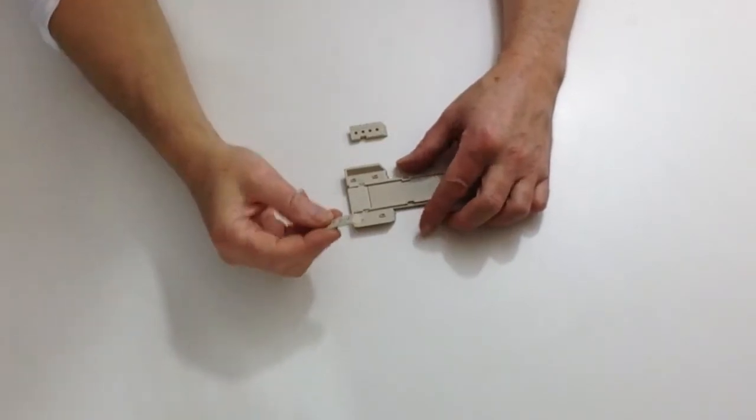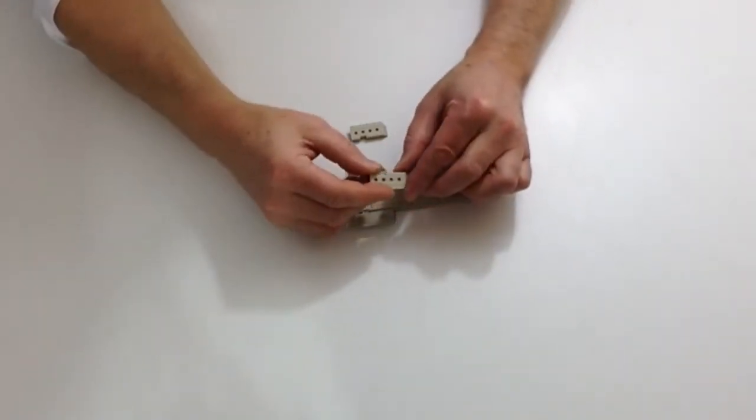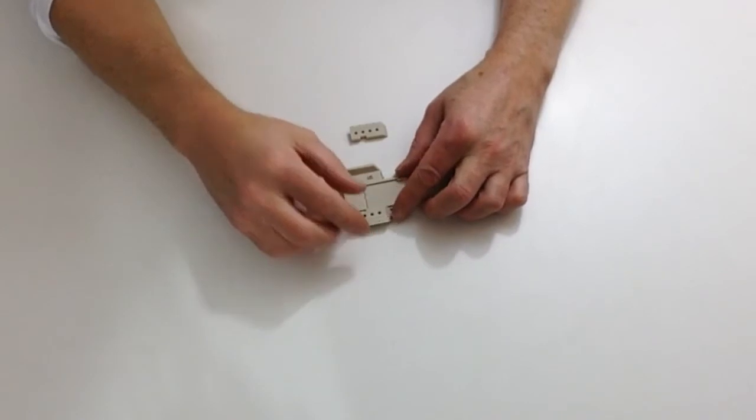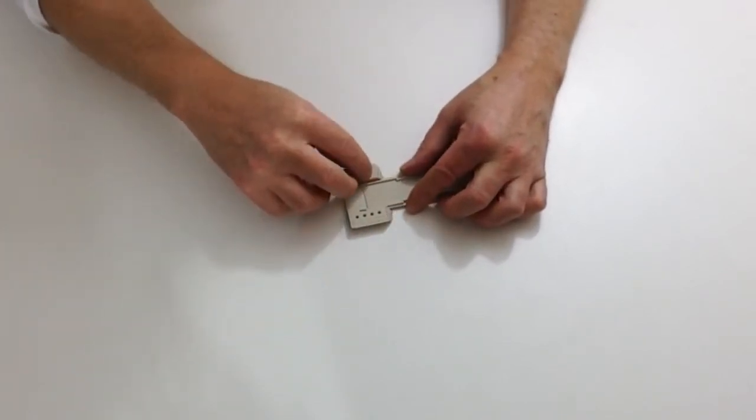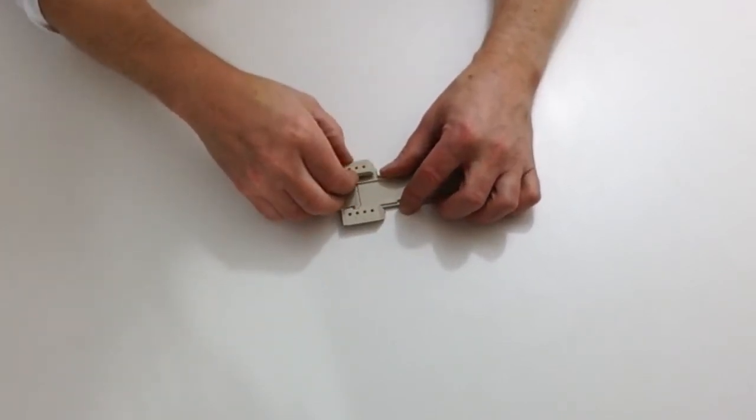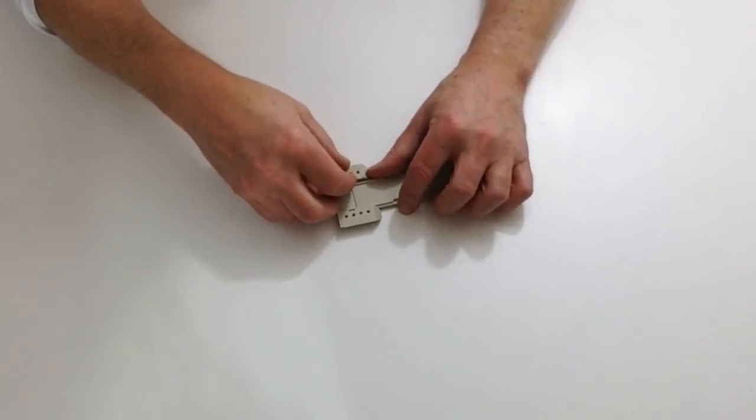Next take the two ramp seals and just test fit those. Once you're happy with the way that they fit, glue those down into position.